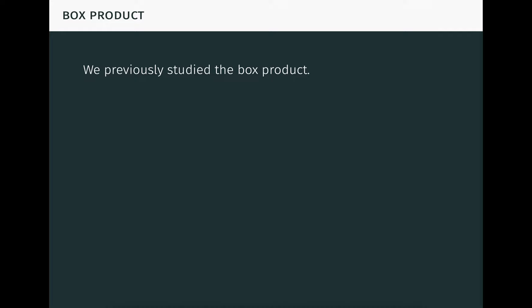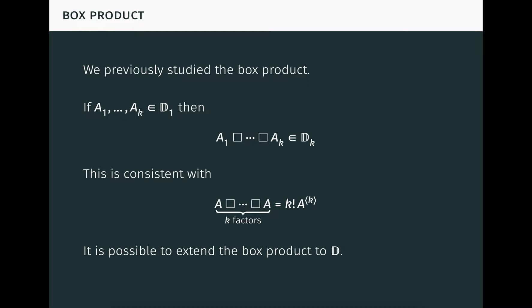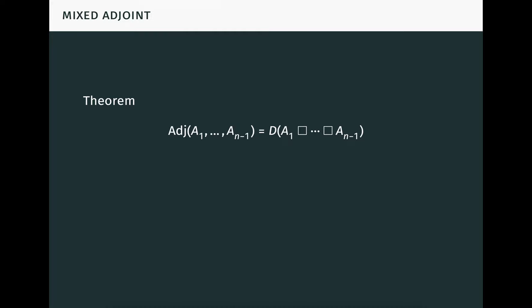In a prior video, we studied the box product of matrices. If we think of the matrices a1 through ak as being in d1, then it's natural to think of their box product as being in dk. This is consistent with the fact that the box product of k copies of a matrix A is, up to factorial, just the kth compound power of A, which we think of as being in dk if we think of A as being in d1. Importantly, it's possible to extend the box product operation to all of d, and it remains a symmetric or commutative operation. The general definition is a little complicated though, so we won't write it down. Composing the box product operation with the dual operation is fruitful. For example, the mixed adjoint of matrices is just the dual of their box product. For more information on the mixed adjoint, see my other video on it. If we take all of the matrices equal, this theorem just says that the classical adjoint is the dual of the n minus first compound power, which we already know.